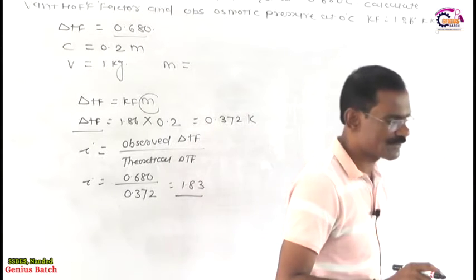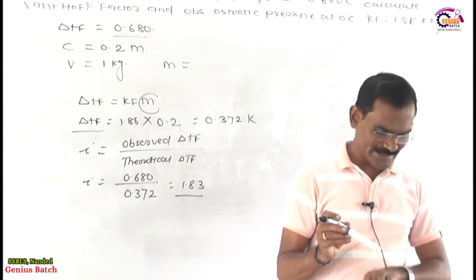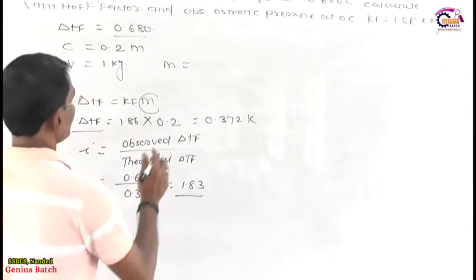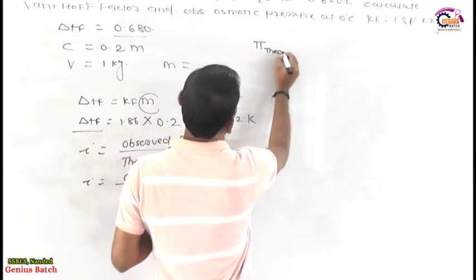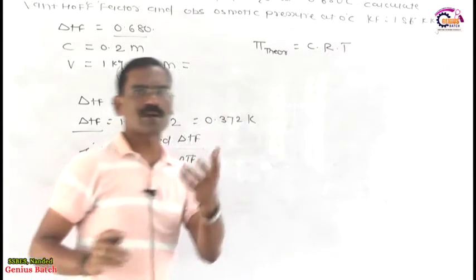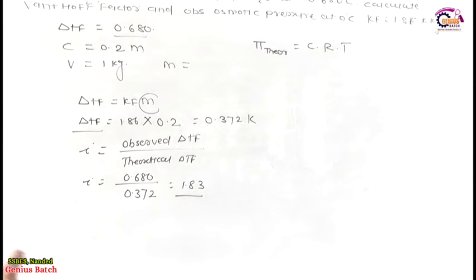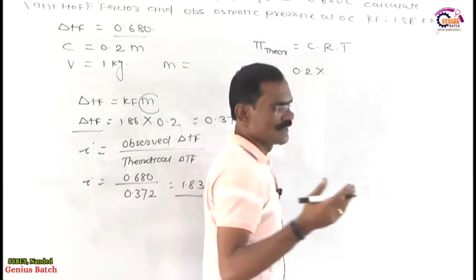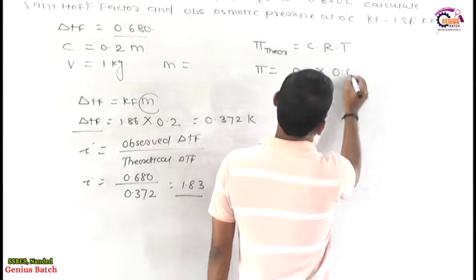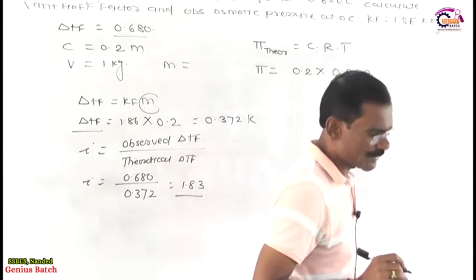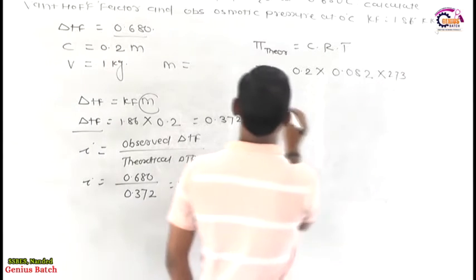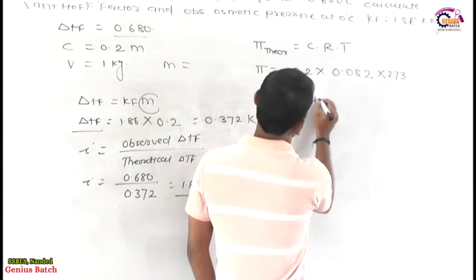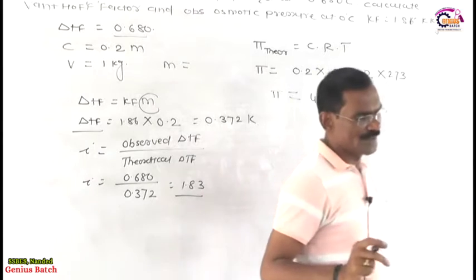Now we are going to calculate the observed osmotic pressure. First, calculate the theoretical osmotic pressure. Pi theoretical equals CRT. Concentration is 0.2, R is 0.082 liter atmosphere, and temperature is 273 K. By using this, pi theoretical becomes 4.477 atmosphere.